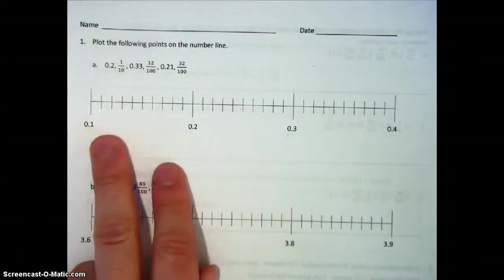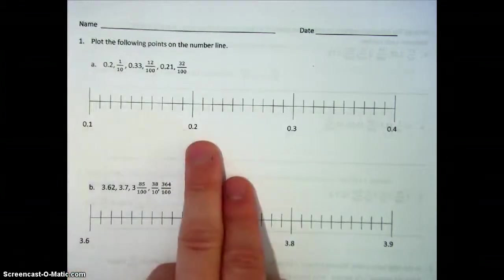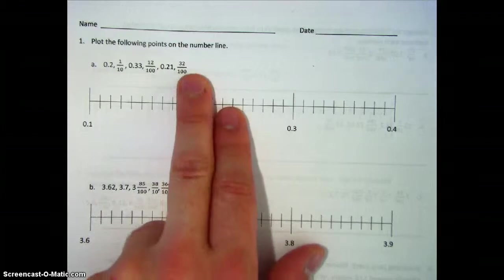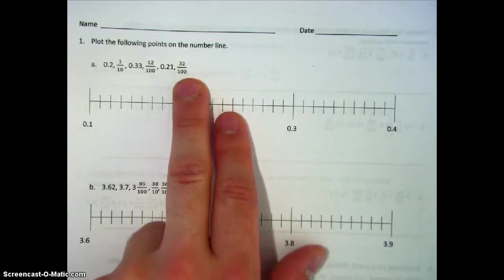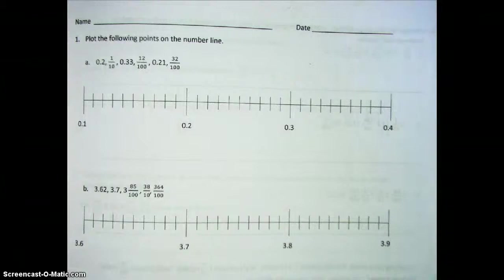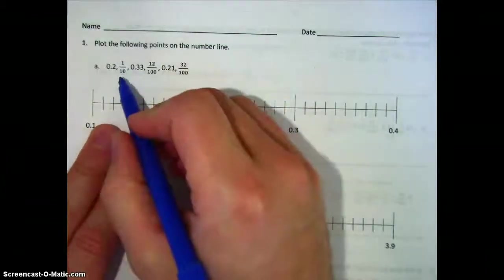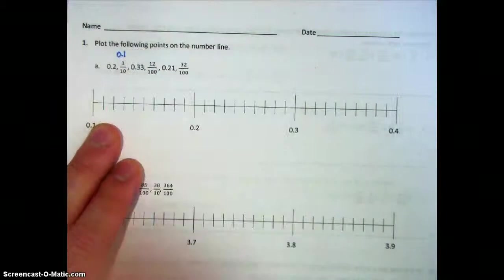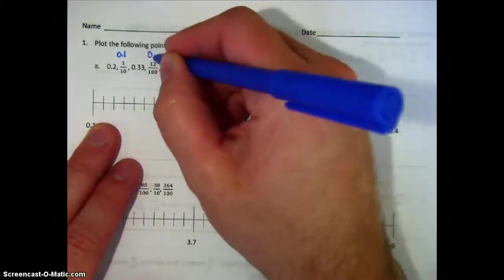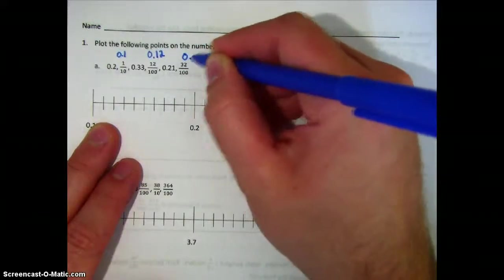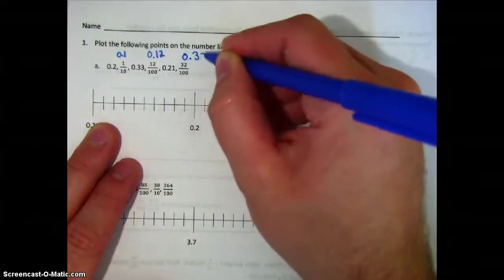Looking at our number line, we see that it is in decimals. So what we're going to do is first convert all of our fractions into decimals, so it's a little bit easier to plot them. So we take a look at one-tenth, which looks like 0.1. Then we have twelve-hundredths, which looks like 0.12. And then finally, thirty-two-hundredths, which looks like 0.32.